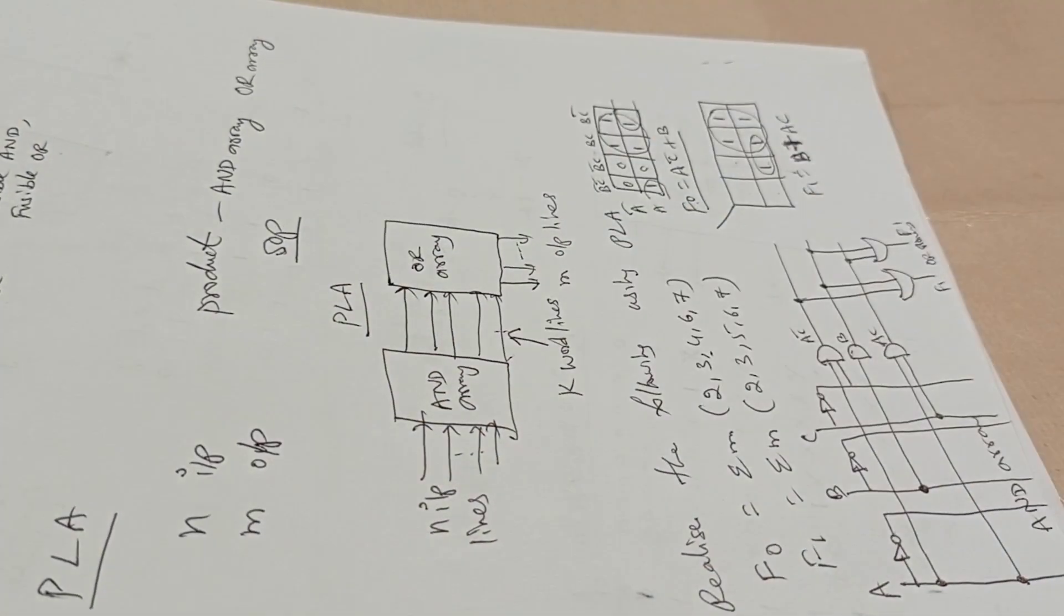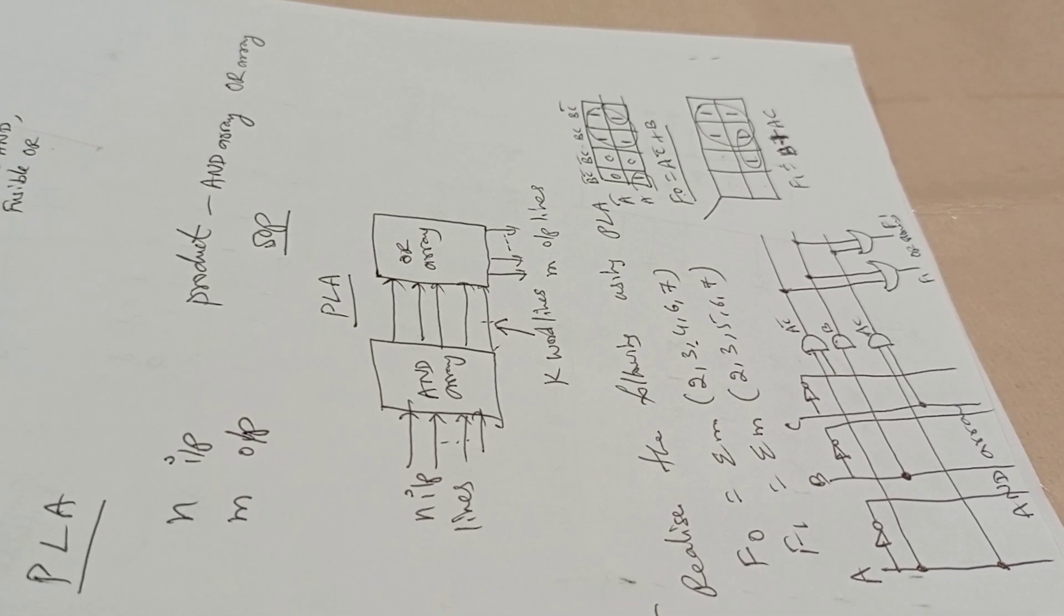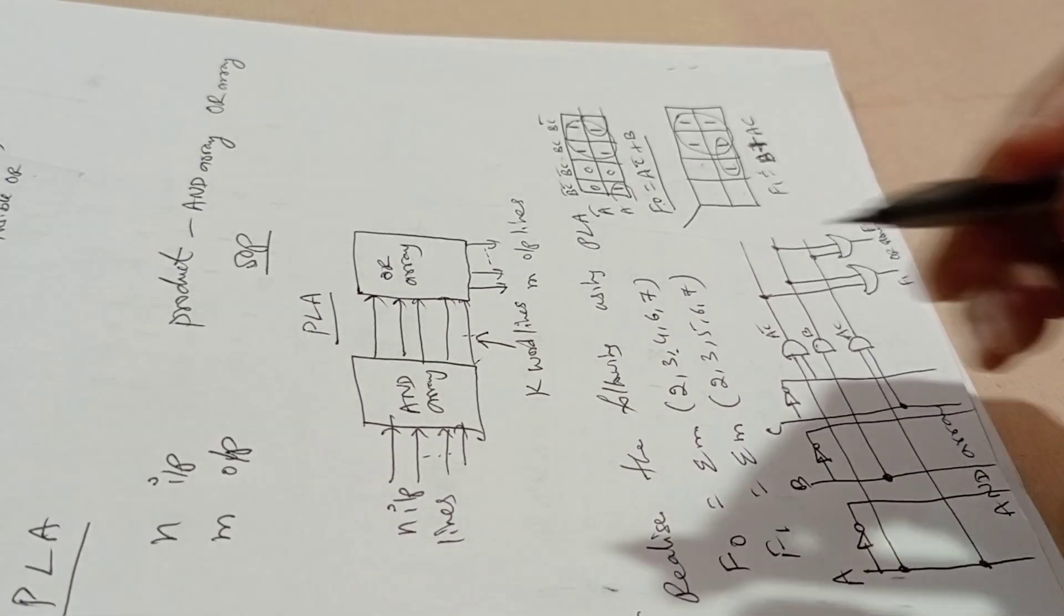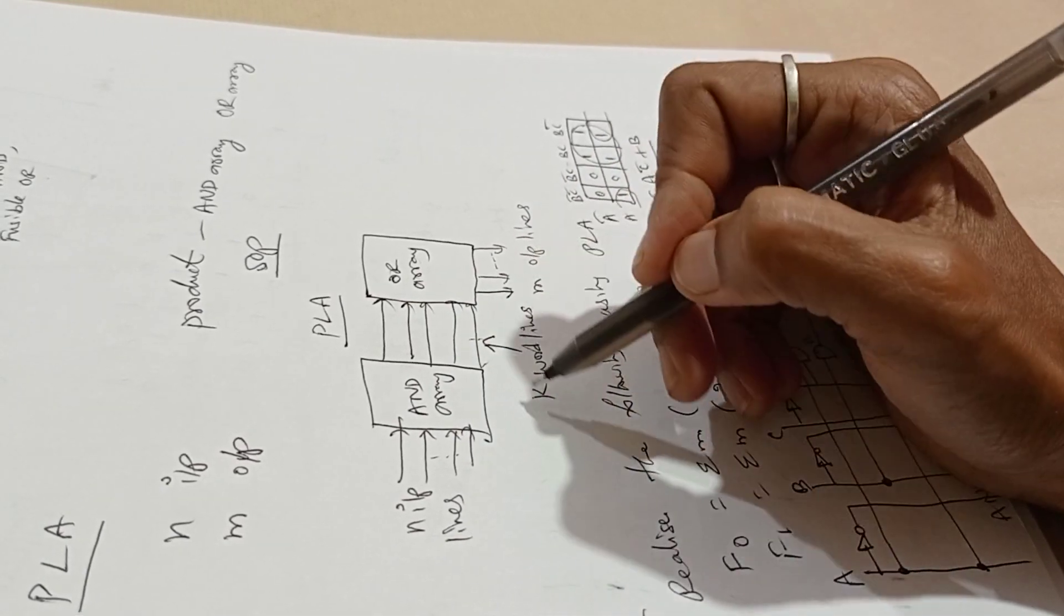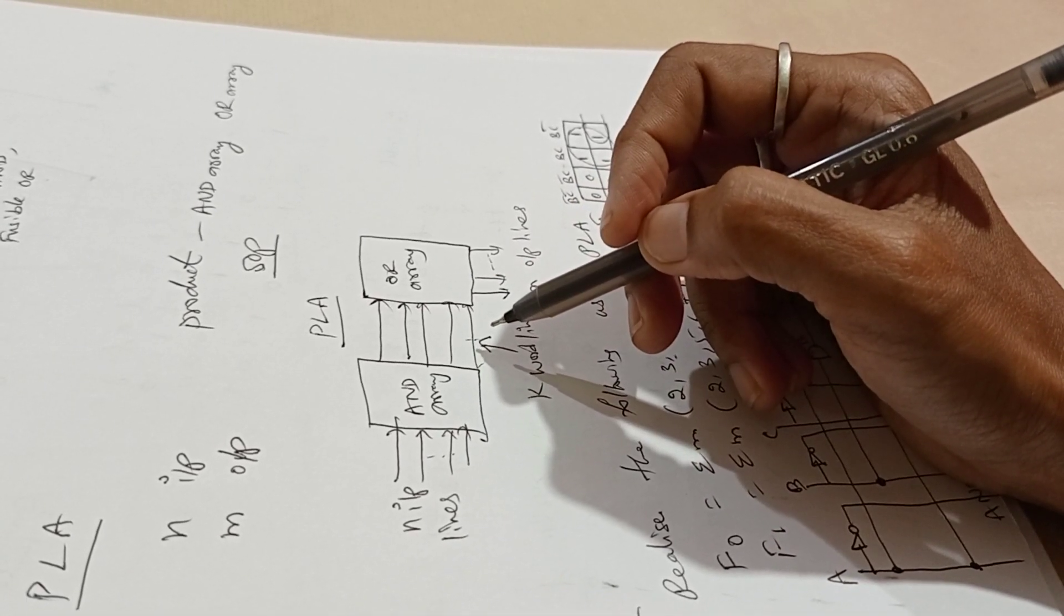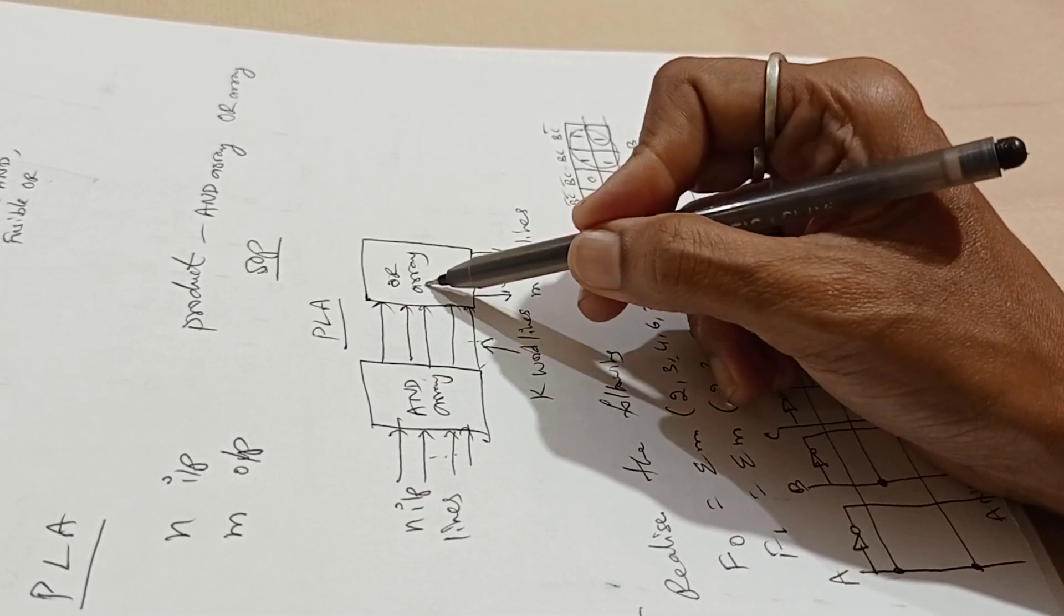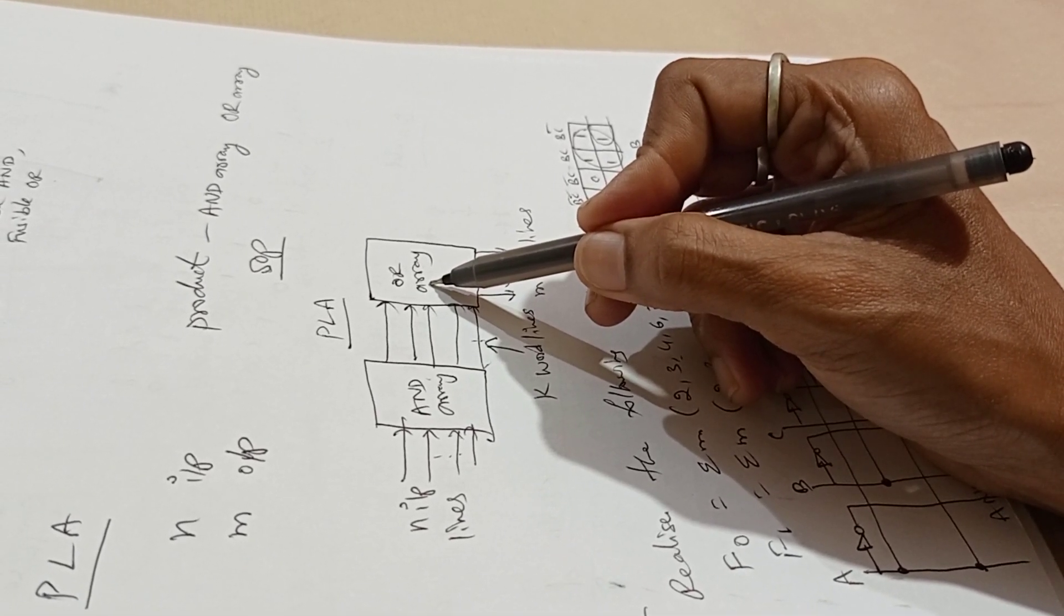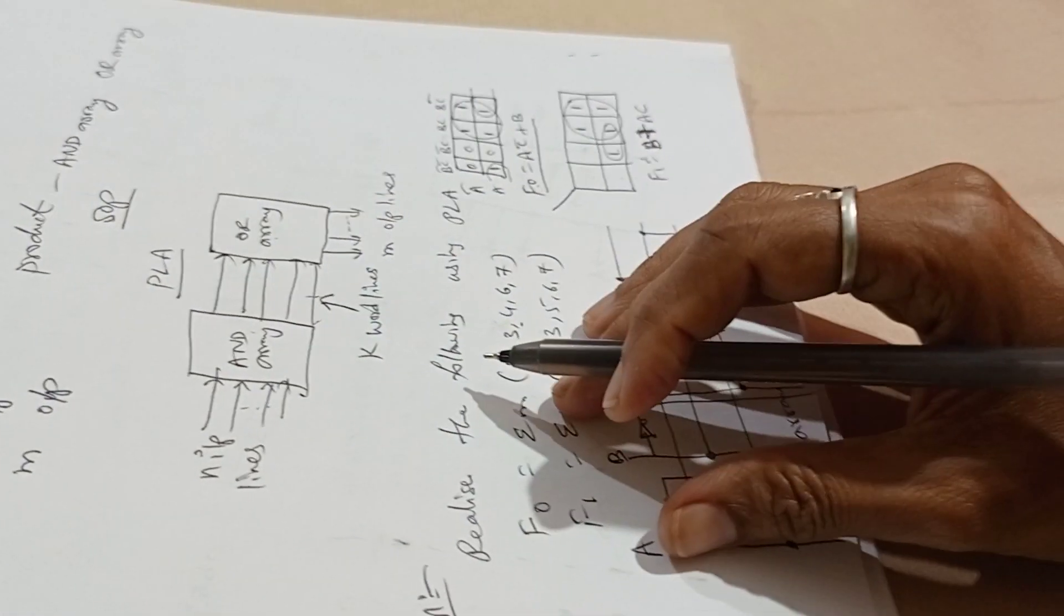Now we will see what is PLA and how to design this circuit. In PLA, it consists of N inputs and M outputs. You can realize M functions in N variables. Here N inputs and M output lines, with K output lines. In PLA, the product terms of the input variables are realized by AND gate. This produces the product terms needed to form the output function.